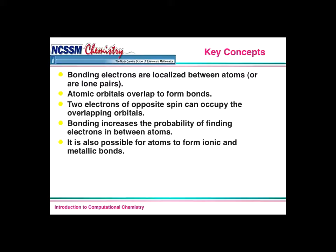You should also be starting to understand that atomic orbitals overlap to form bonds. We take an atomic orbital like an s orbital on a hydrogen and overlap it with an s orbital on another hydrogen — that forms a molecular orbital, which is what we call the bond. Two electrons of opposite spin can occupy the overlapping orbitals, and bonding increases the probability of finding electrons in between atoms, as you saw in the Electron Density Lab with single, double, and triple bonds. It's also possible for atoms to form ionic and metallic bonds, but we're really going to be talking mostly about covalent bonding.